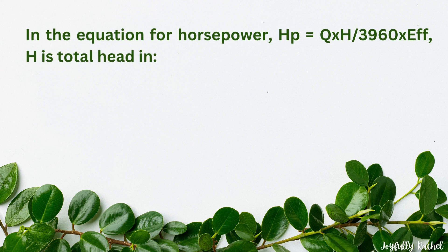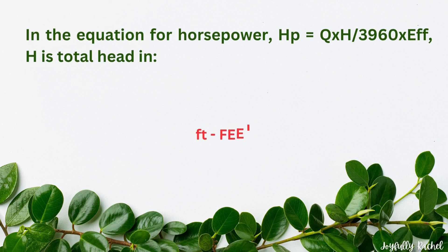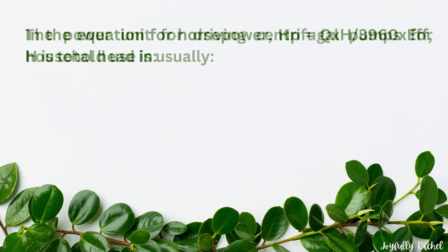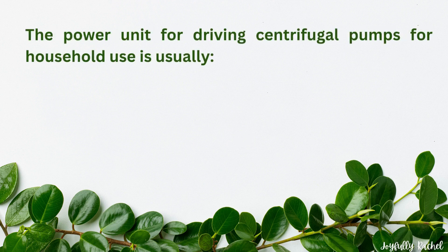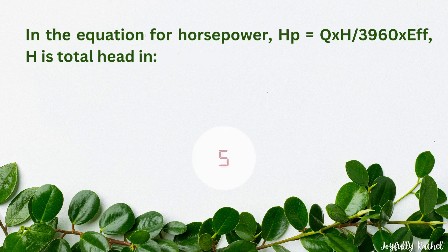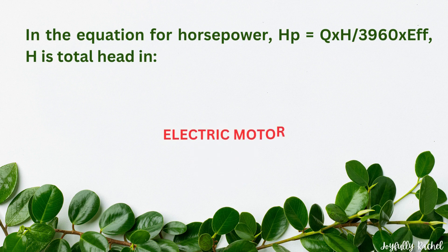In the equation for horsepower, HP equals Q times H over 3960 times efficiency, H is total head in feet.